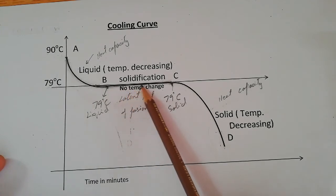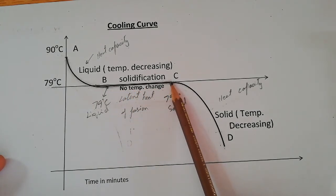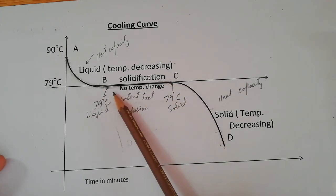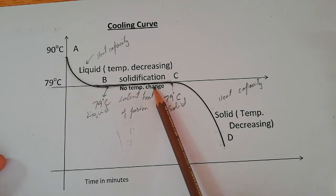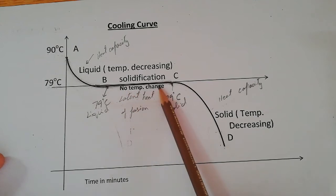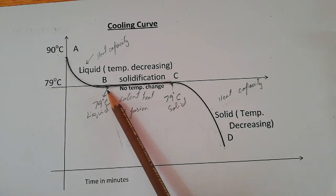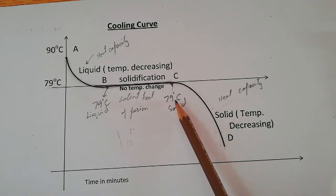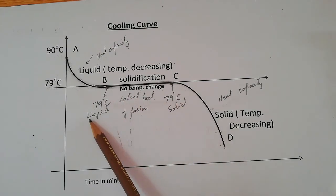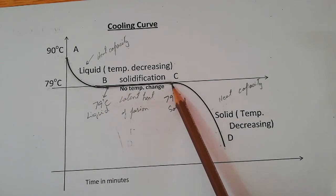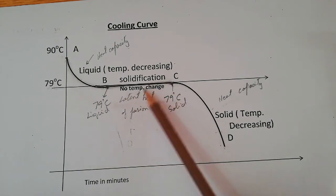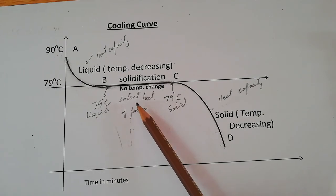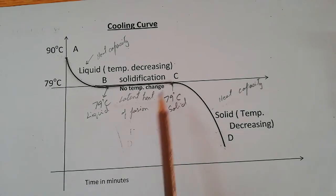When further heat is taken out during this interval, that will change the state of naphthalene from liquid to solid. Between B and C there will be a mixture of solid and liquid, because solidification starts at B and at C the process of solidification completes. At point C it will be solid at 79 degrees Celsius — it was liquid at 79 degrees Celsius at point B, and at the end it is solid at 79 degrees Celsius. The heat taken out from naphthalene can be calculated with the formula for latent heat of fusion.